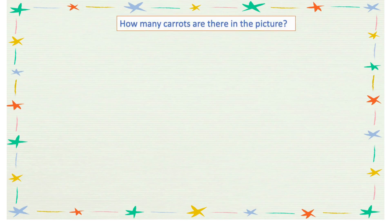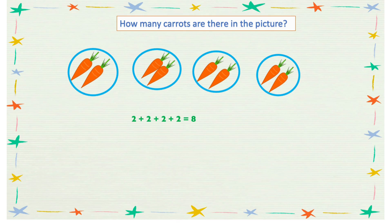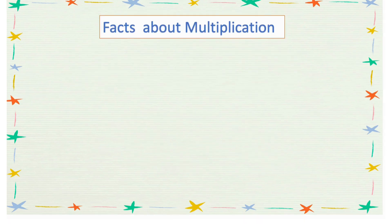Another example — how many carrots are there in the picture? We have 4 groups of carrots and in each group we have 2 carrots. So 2 plus 2 plus 2 plus 2 equals 8. In multiplication form we can do 4 times 2, which gives us 8 carrots all together.